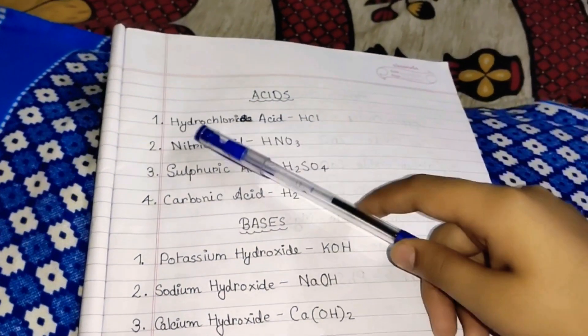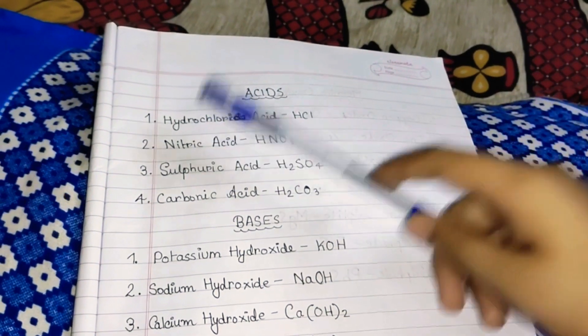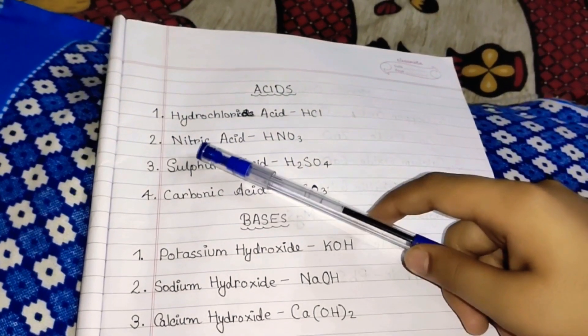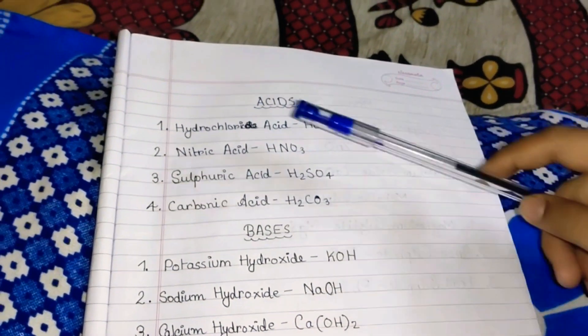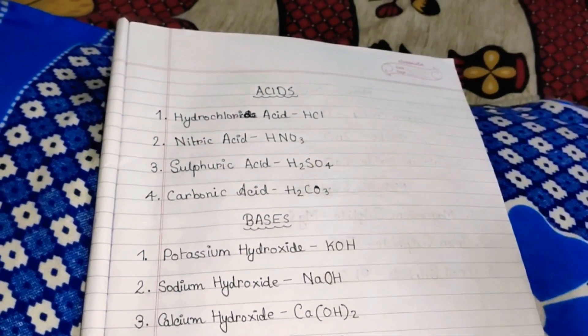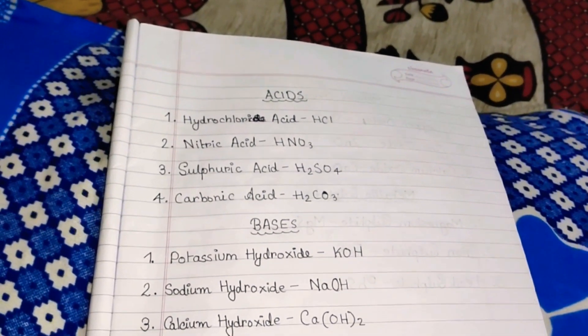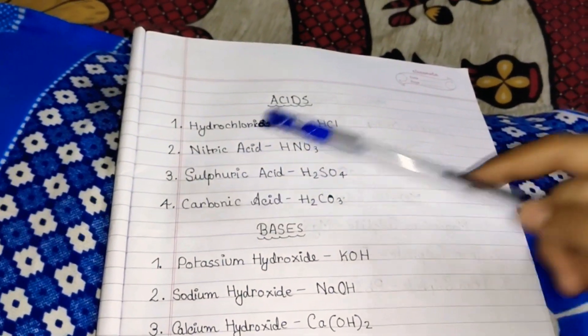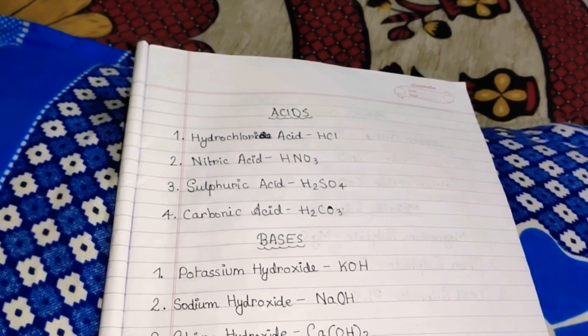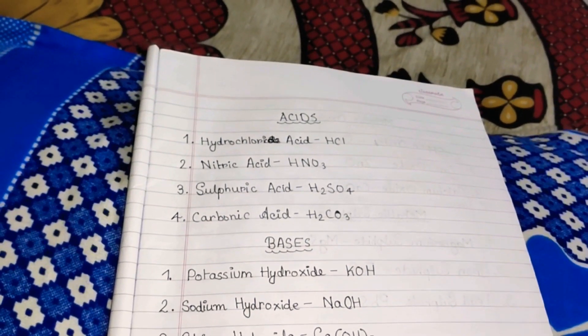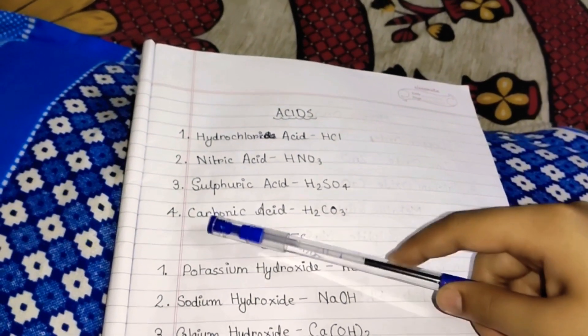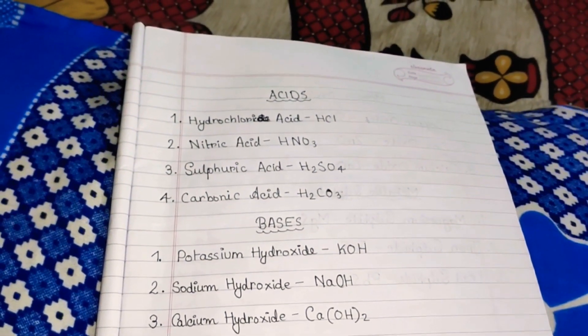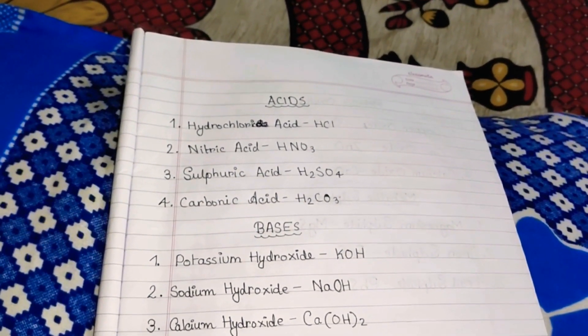First, Hydrochloric Acid HCl. Second, Nitric Acid HNO3. Third, Sulfuric Acid H2SO4. Fourth, Carbonic Acid H2CO3. Now these were all the acids. Now we will move to the bases.